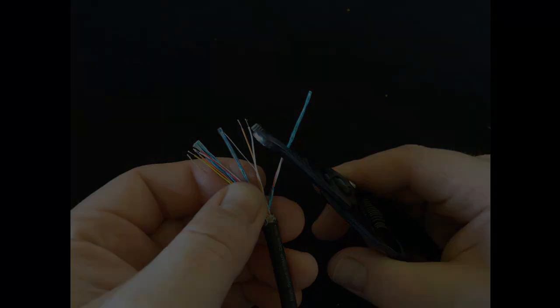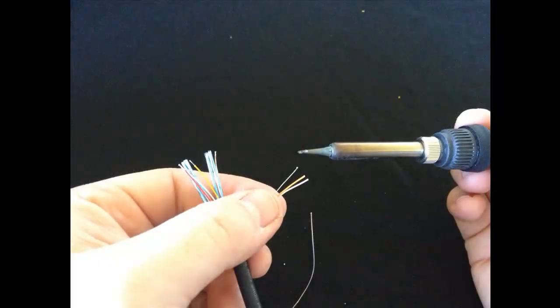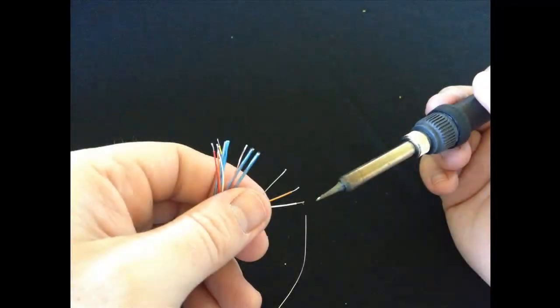Once the shielding is removed for each of these wire sets, tin the end of each wire starting with the bare wire, also known as the drain wire. Repeat this process for the rest of the foiled wire sets.